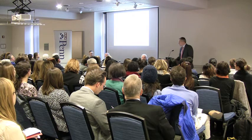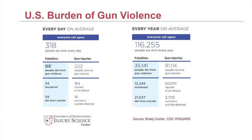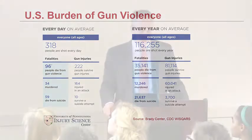What does this look like marked out over a year? Every year in the United States, 116,000 people are shot, of whom 35,000 will die. Of those deaths, 12,000 are murders and about 22,000 are suicides.